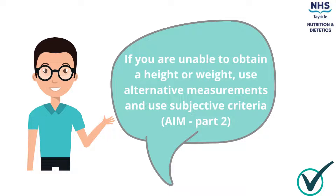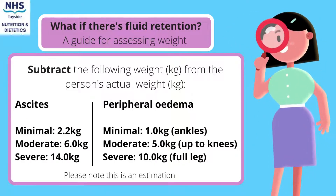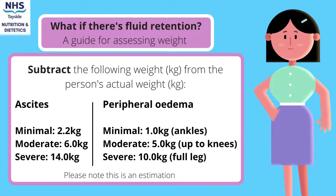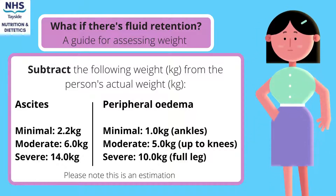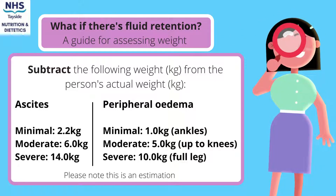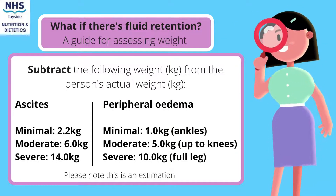If it is not possible to obtain a height or weight, alternative measurements can be used, including ulna length, demi-span, or the use of subjective criteria — this will be discussed further in part 2. Fluid retention can impact on someone's weight, leading to inaccurate BMI scores and masking malnutrition. If someone has ascites or peripheral oedema, determine the severity and deduct this from the patient's actual weight to obtain a dry weight for MUST calculations. Please note this is an estimation.